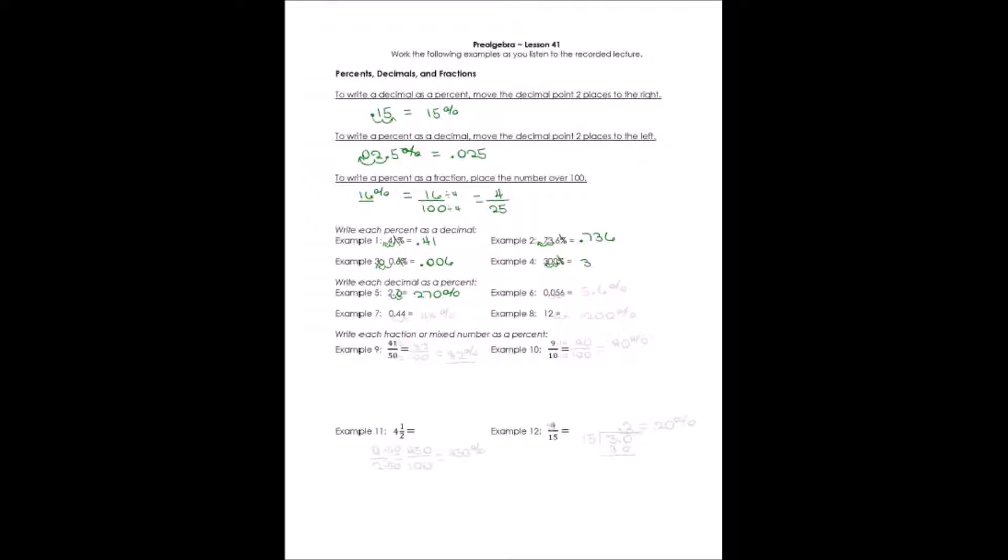Number six, moving it two places to the right makes it 5.6. And, of course, I have to add my percent sign. Number seven, moving it two places to the right makes this a 44%. And number eight, I start at the whole number, the end of the whole number, so when I add two places to go to the right two places, I have to add two zeros. Twelve is really 1,200%.